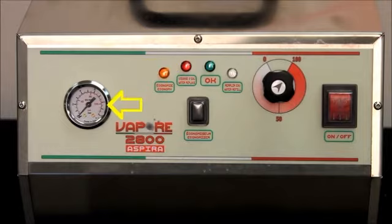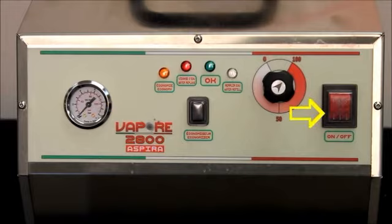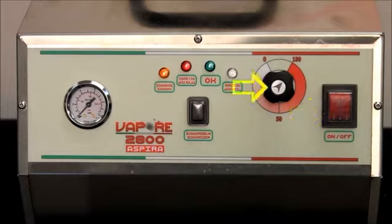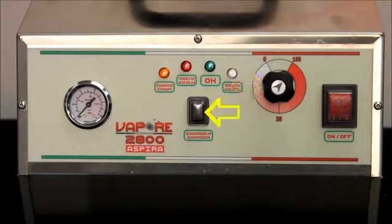Your pressure gauge indicates the amount of pressure in the boiler. Your on and off switch turns the machine on and off. Your regulator knob regulates the vapor pressure quantity, and your economy light allows for manual shifting from electrical economy to normal function and vice versa.